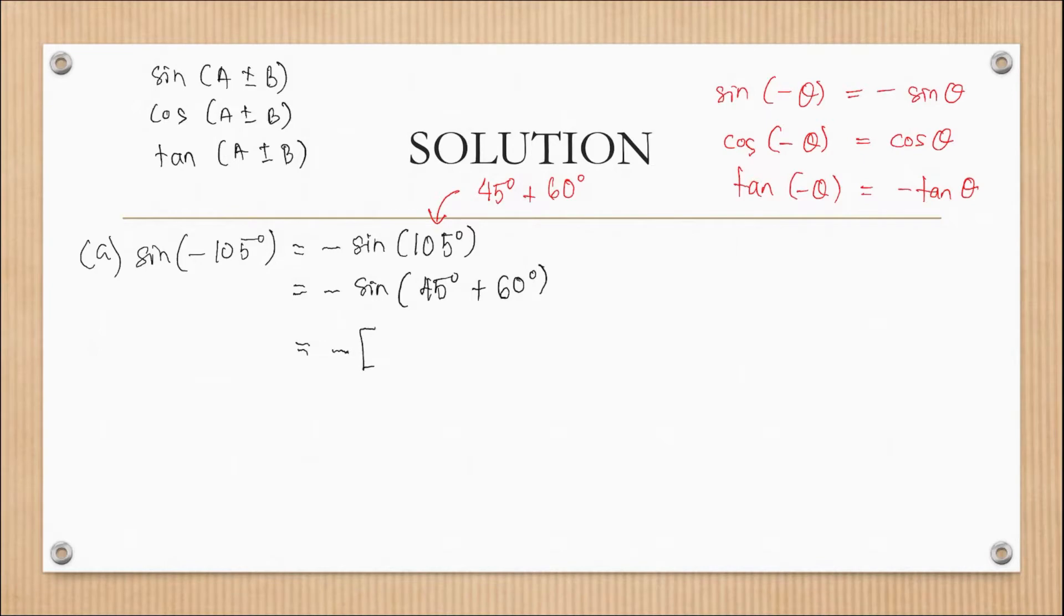So I will use the compound angle formula sin(A+B) equals sin(A)cos(B) plus cos(A)sin(B). And you can refer this to your special angle table or you can just press your calculator and it will give you the exact value. Sin(45°) is √2/2, cos(60°) is 1/2.